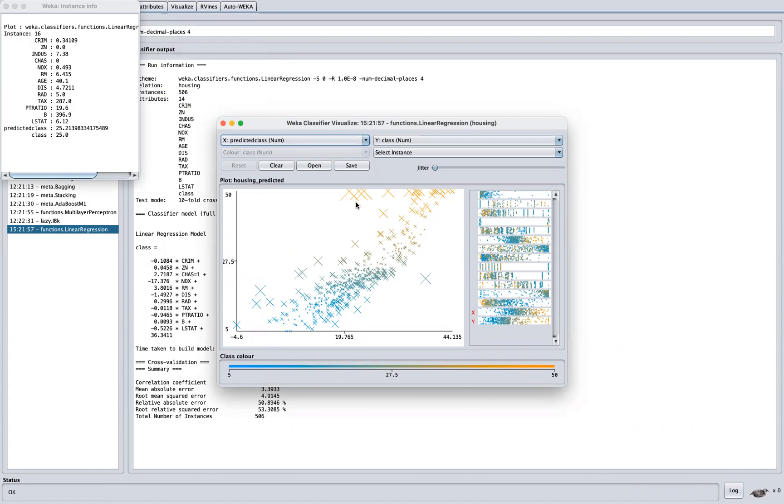So anything further away from this line just results in an error. So like this one, we predicted 28 and the class is 42, right? And we can see this is instance 373, we can actually go in and see, given this measurement, the housing dataset.